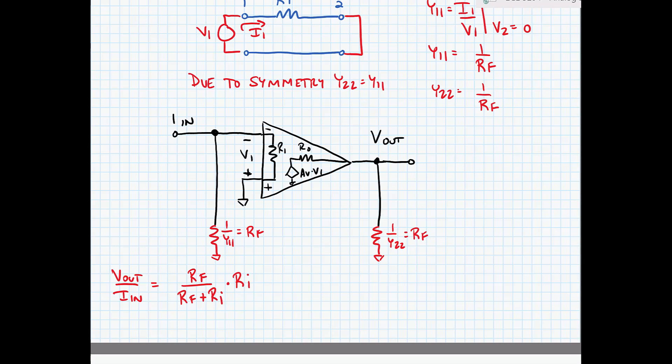At the output, I just have a voltage division. So I have AV times RF divided by RO plus RF. Alright, so this is my current gain.